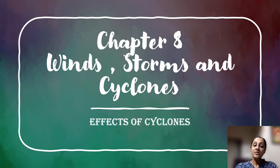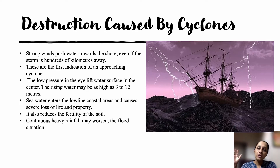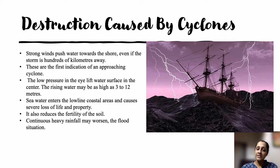This video is about the effects of cyclones — how much destruction a cyclone can cause and what measures we should take to avoid such destruction. When we talk about destruction caused by cyclones, there will be strong winds which push water towards the shore, even if the storm is hundreds of kilometers away. That is why people on the beach are told not to go near the shore. Once satellite images confirm a cyclone in the area, fishermen and the general public are not allowed to go into the sea or near the seashore.